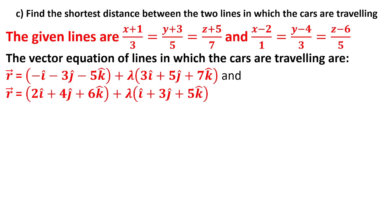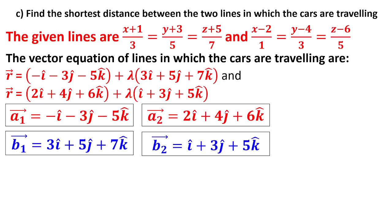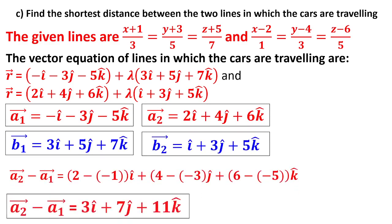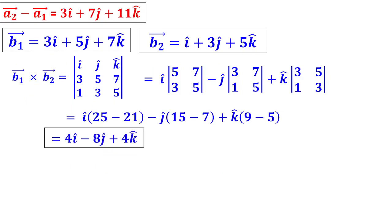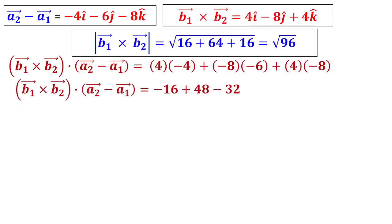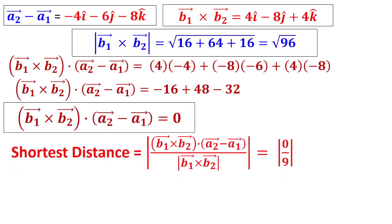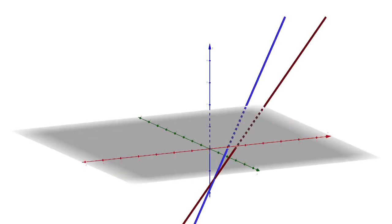Find the shortest distance between the two lines. The lines are given and I will find it using the vector method. Therefore I am finding A₁, A₂, B₁, B₂ by converting them into vector form. Finding A₂ minus A₁, then finding B₁ cross B₂. B₁ cross B₂ dot (A₂-A₁) is coming as 0. Putting it in the shortest distance formula, the answer is 0. What does it indicate? The shortest distance is 0, the lines may intersect. This is the 3D diagram showing the lines intersect.